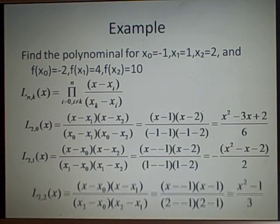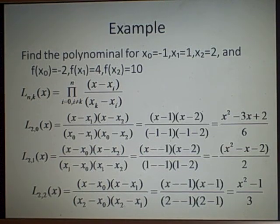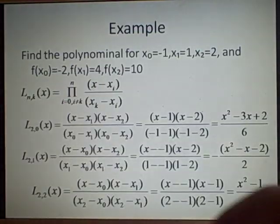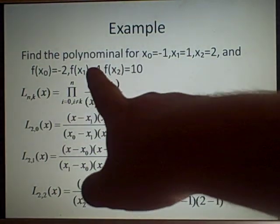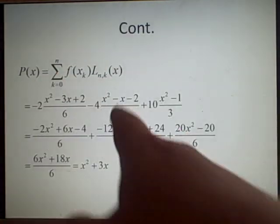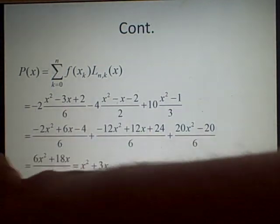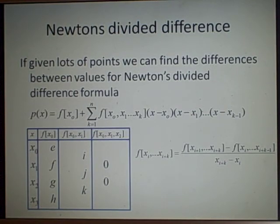Finally for k=2, we use x0 and x1, which multiplies out accordingly. The next step is to multiply each L_k by the corresponding function value: -2 times L0, 4 times L1, and 10 times L2. Once we've done that and simplified, the final answer is x squared plus 3x.